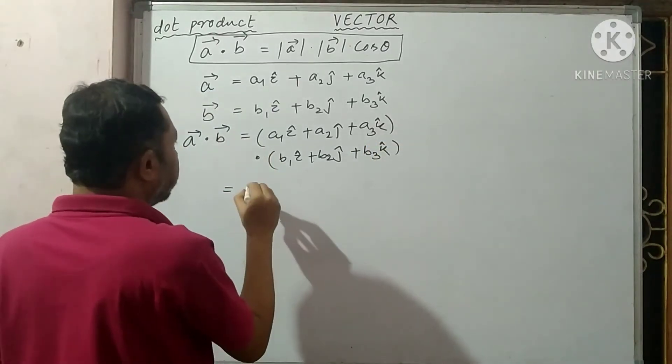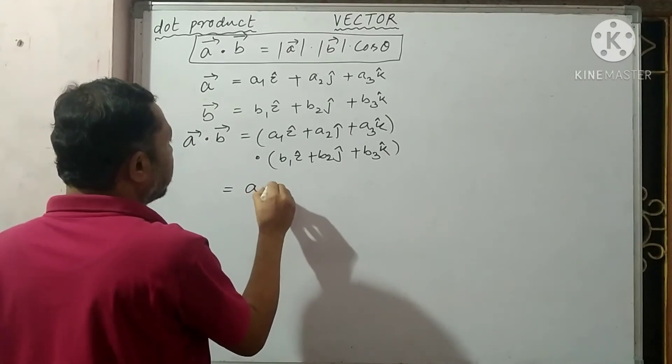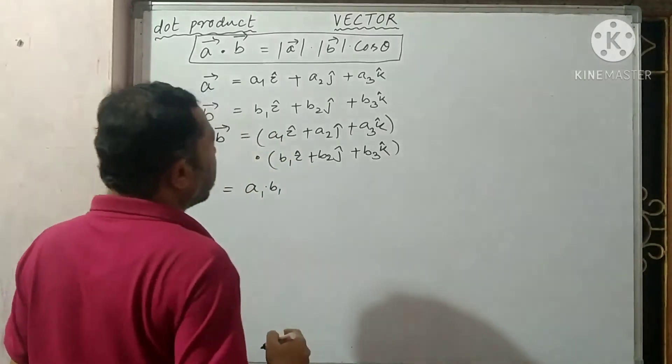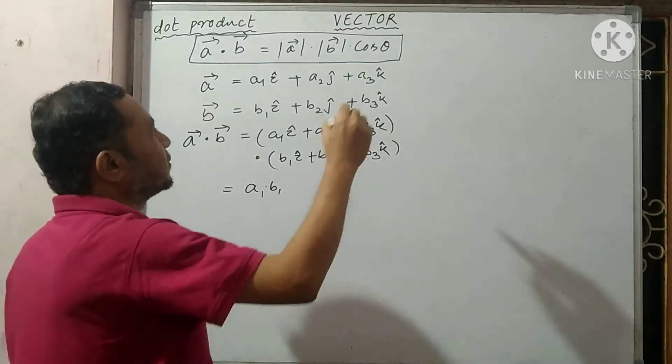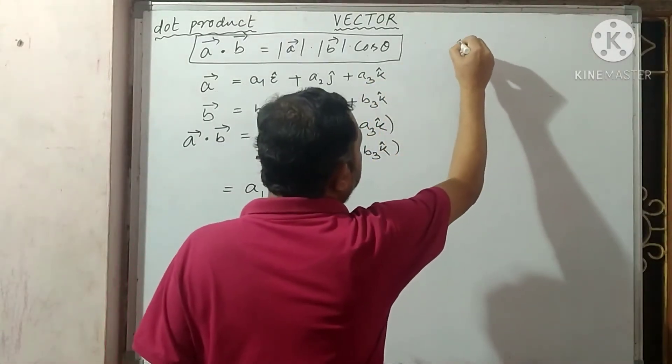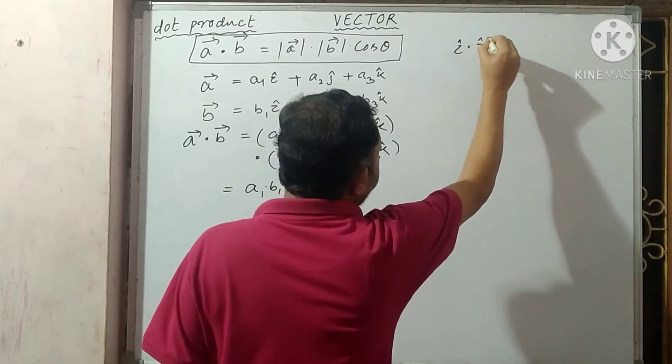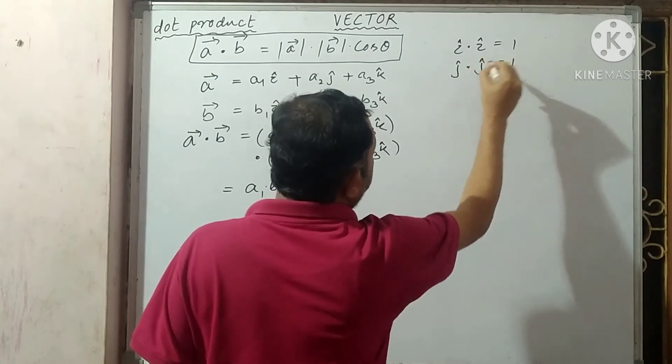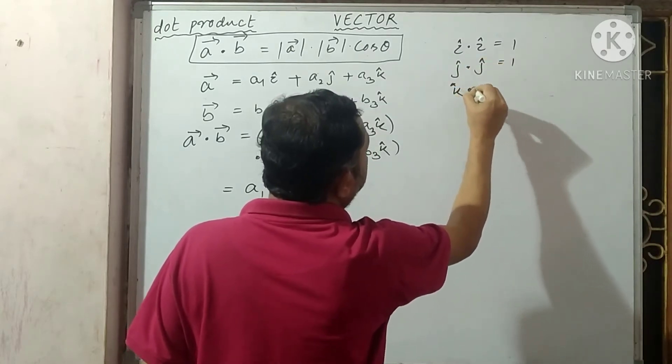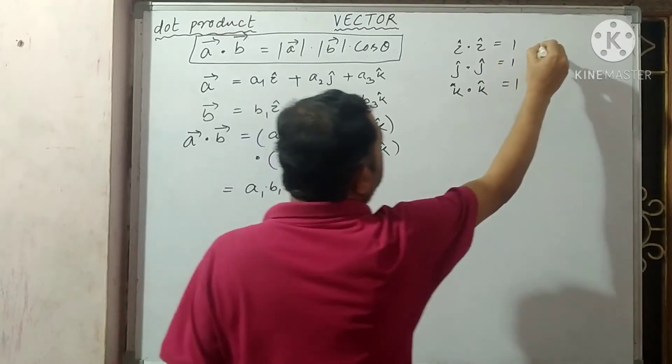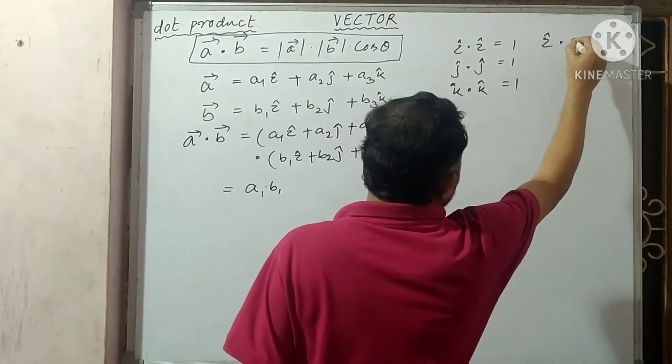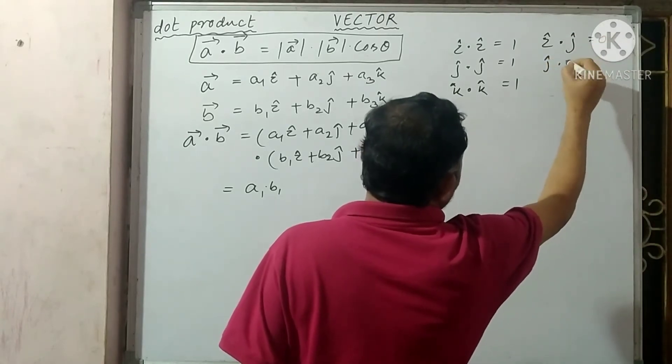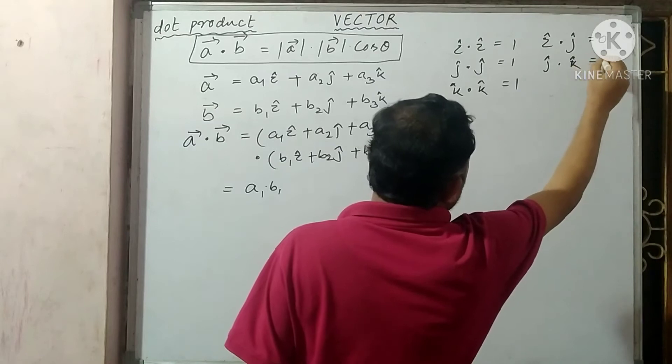The result is A1 into B1, where i-cap dot i-cap is 1, j-cap dot j-cap is 1, and k-cap dot k-cap is 1.